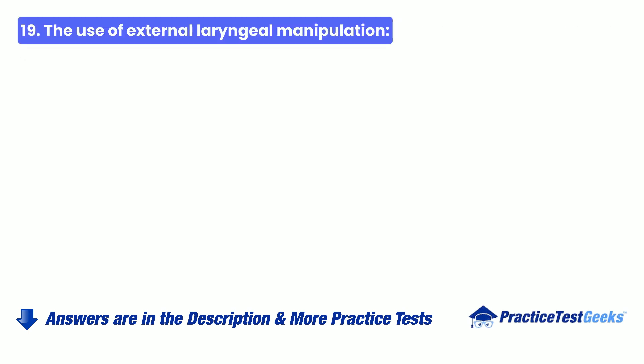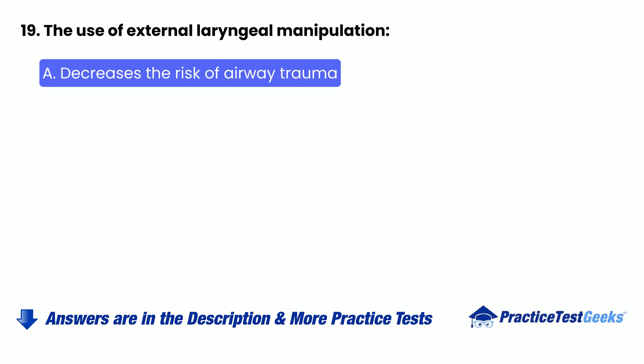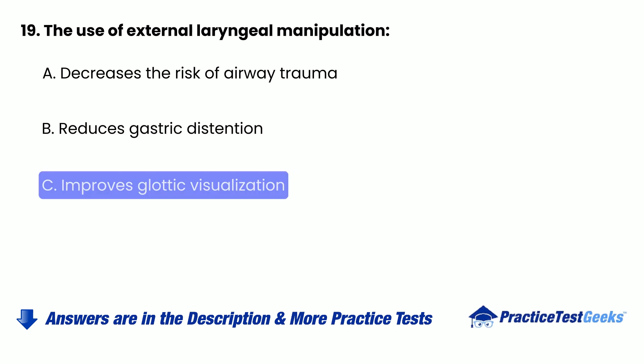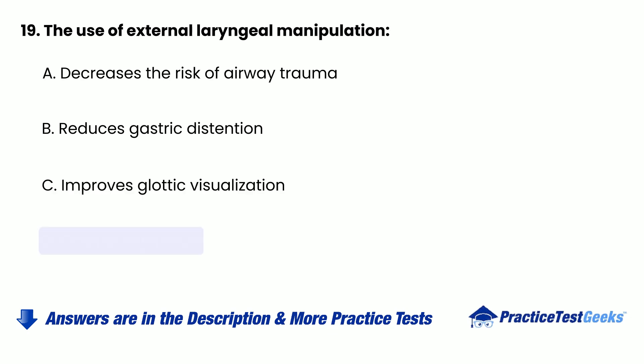Question 19: The use of external laryngeal manipulation: A. Decreases the risk of airway trauma. B. Reduces gastric distension. C. Improves glottic visualization. D. Causes aspiration.